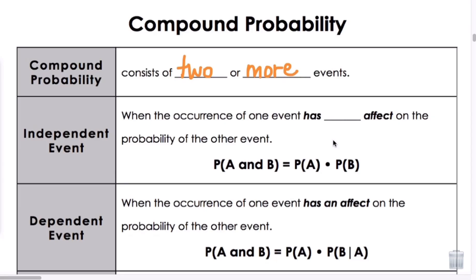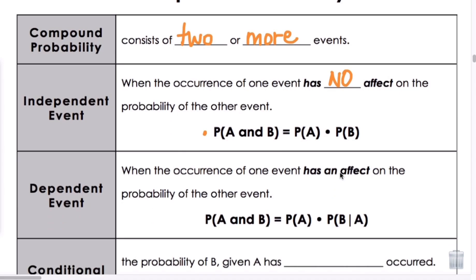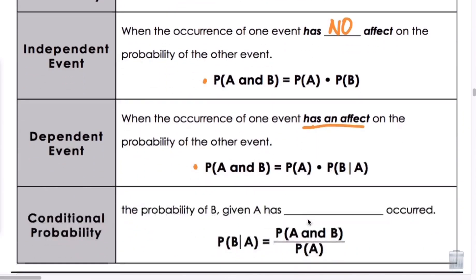An independent event is when the occurrence of one event has no effect on the probability of the other event, and we have that formula here. A dependent event is when the occurrence of one event has an effect on the probability of the other event, and we can use this formula. Conditional probability is the probability of B given A has already occurred. We can represent it by that. We have three different formulas we're going to use for this lesson.